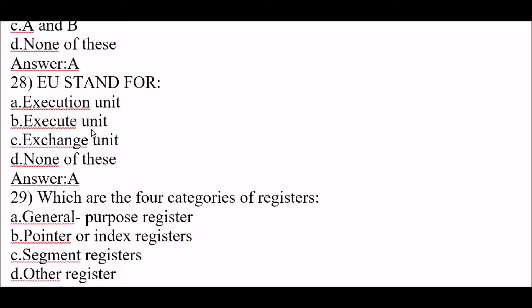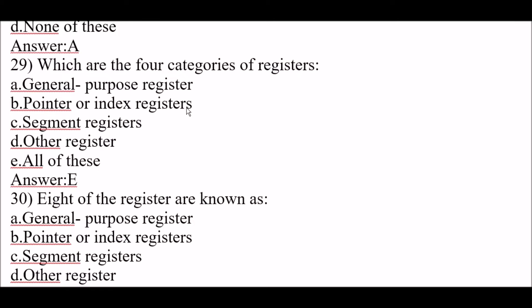Next question: EU stands for option A, execution unit. Next question: which are the four categories of registers? Option A: general purpose registers. Option B: pointer or index registers. Option C: segment registers. Option D: other registers. Option E: all of these. The right answer is option E, all of these.